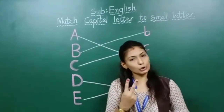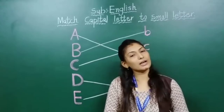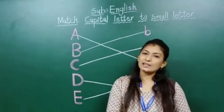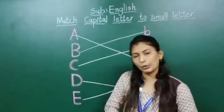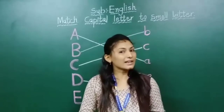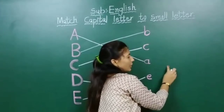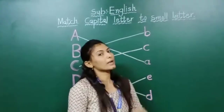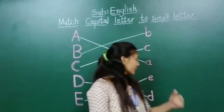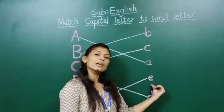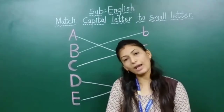Now we will review two topics. First, how to write small letter E. Small letter E — first you make a sleeping line in the blue line, after then curve. The answer is small letter E. Kids, do daily practice at your home.